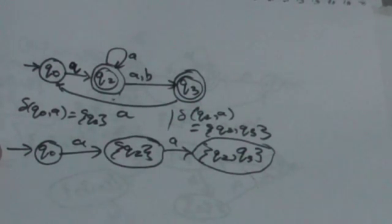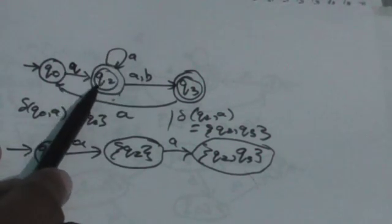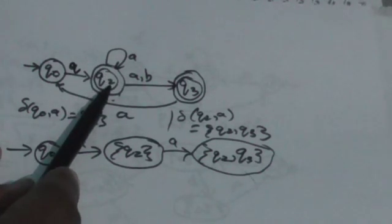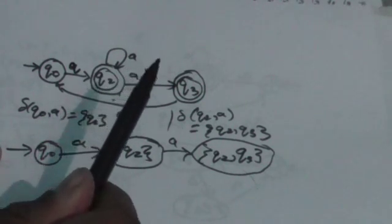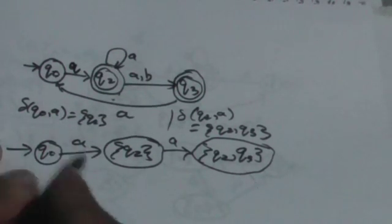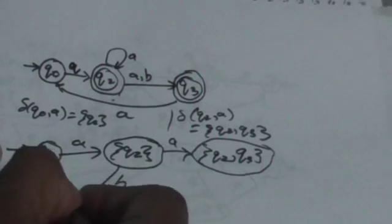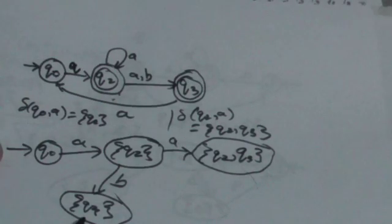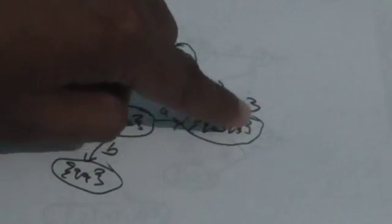Now find the transition of Q2 for input symbol B. From state Q2 we have only one transition for input symbol B, and when we apply B it will jump to state Q3. We add this transition to the DFA.